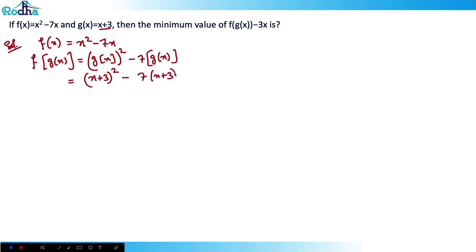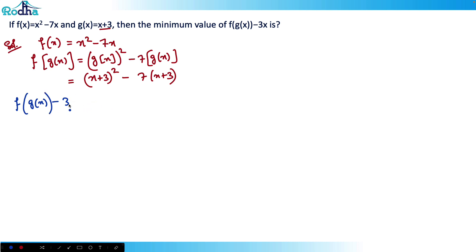Now I can write f(g(x)) minus 3x. So f(g(x)) minus 3x is equal to the value of f(g(x)), which is (x plus 3) whole square minus 7 into (x plus 3), and then minus 3x.